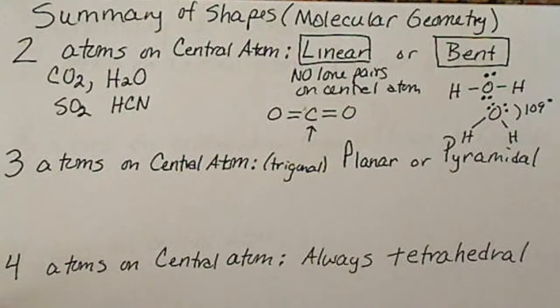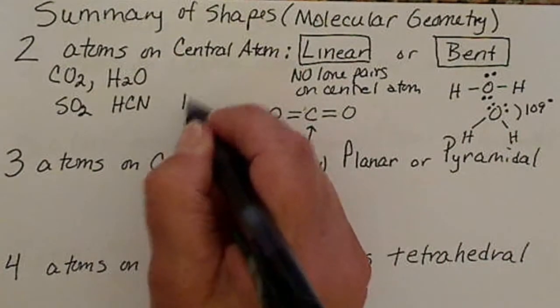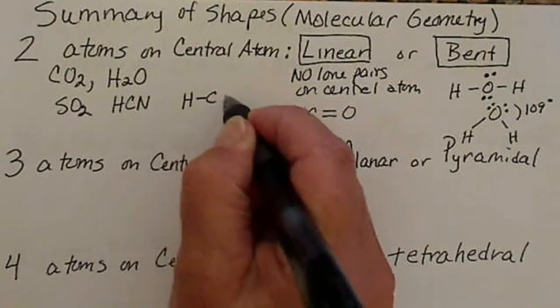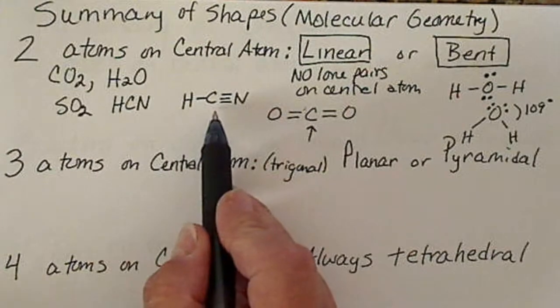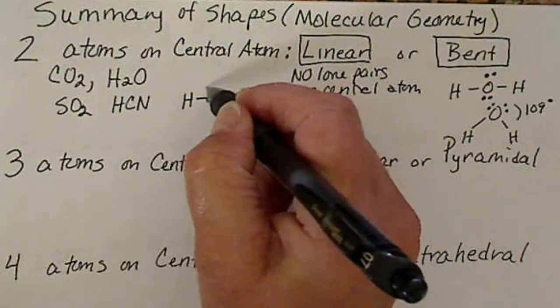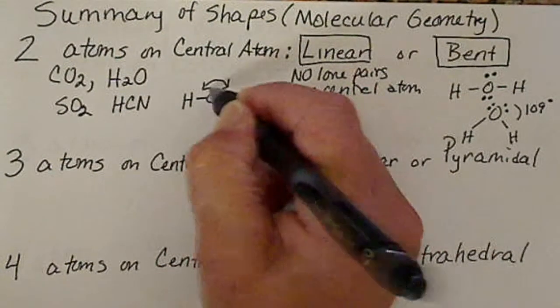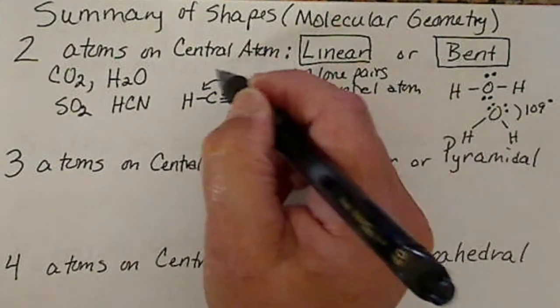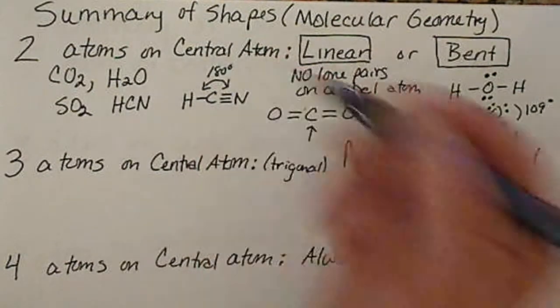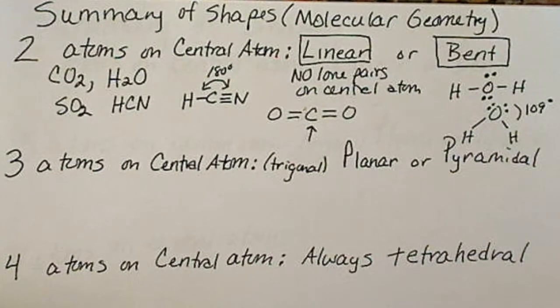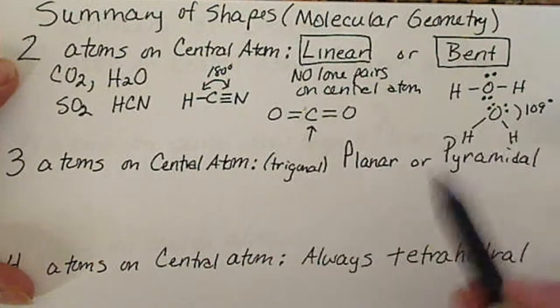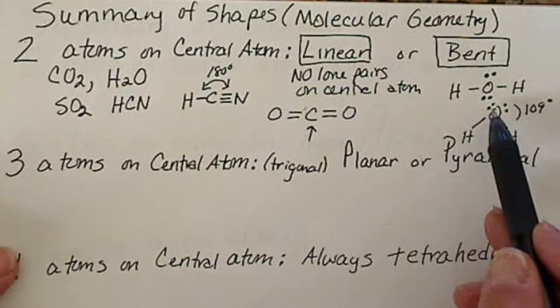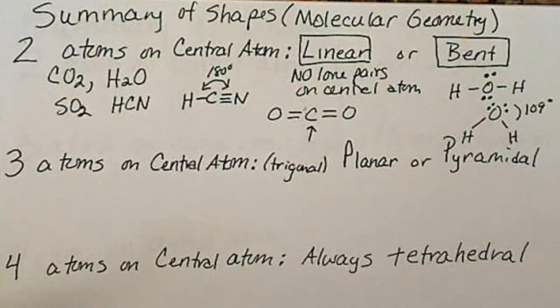HCN is another example of a linear molecule. We did this one, and because carbon does not have any lone pairs, this molecule would also be linear, 180 degrees between those angles. So the distinction between linear or bent is going to be whether or not the central atom has lone pairs.